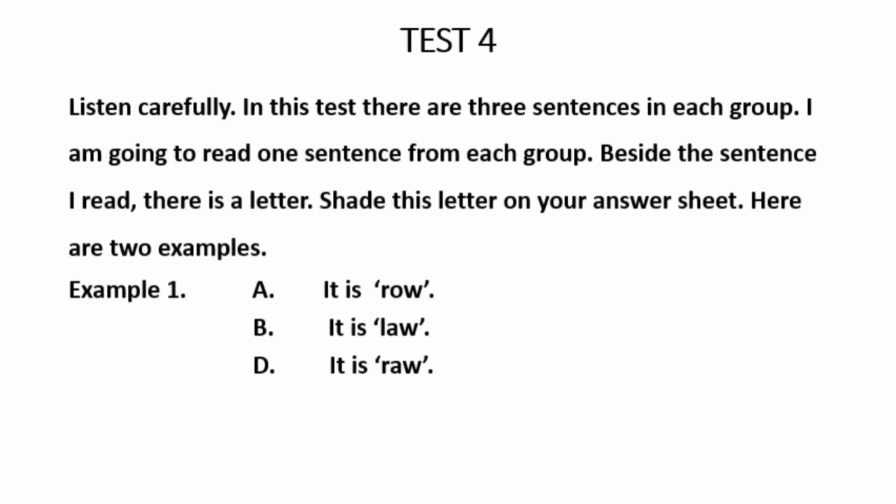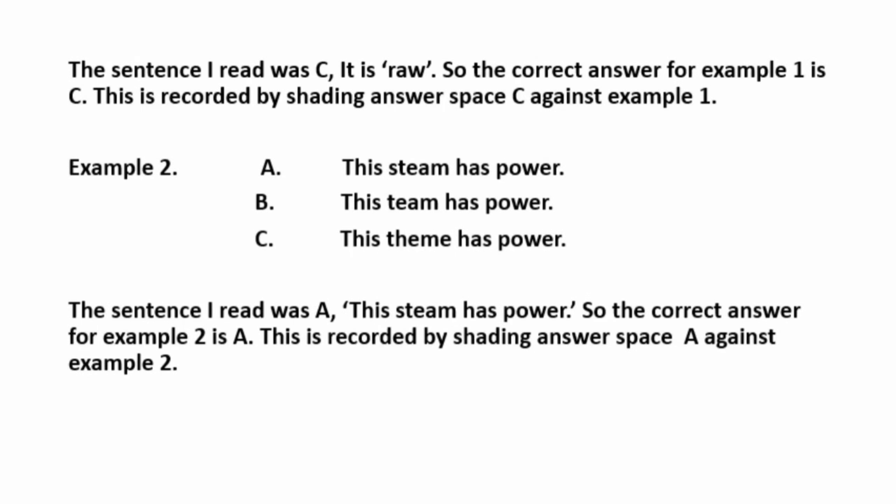Test 4. Listen carefully. In this test, there are three sentences in each group. I'm going to read one sentence from each group. Beside the sentence I read, there is a letter. Share that letter on your answer sheet. Here are two examples. Example 1. It is raw. The sentence I read was C, it is raw. So the correct answer for example 1 is C. This is recorded by shading answer space C against example 1. Example 2. This team has par. The sentence I read was A, this team has par. So the correct answer for example 2 is A. This is recorded by shading answer space A against example 2.